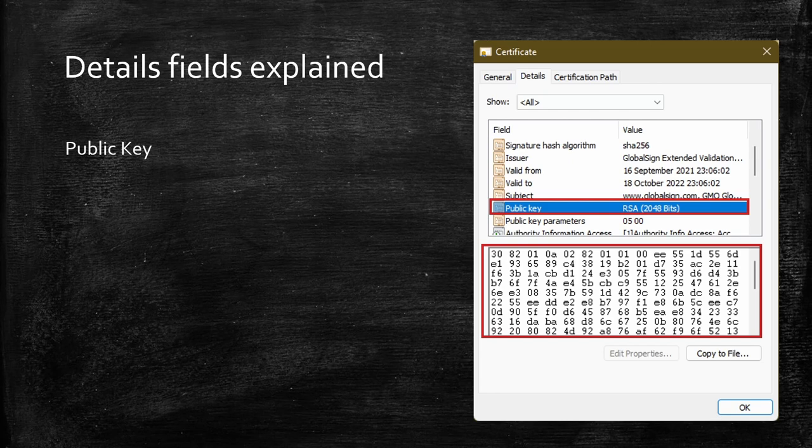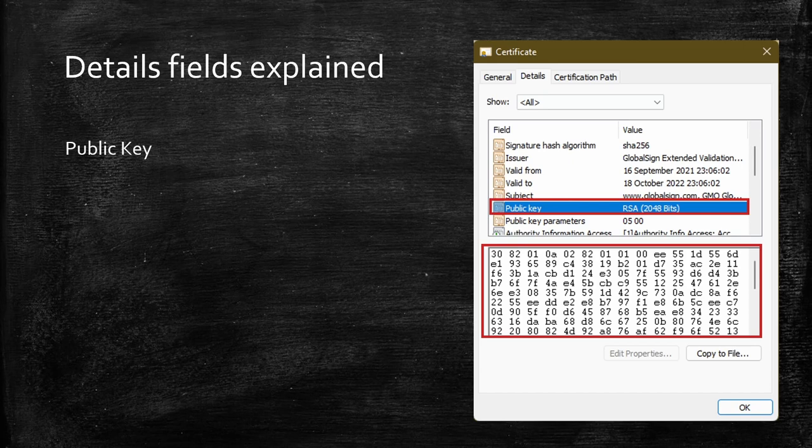Public key shows the ASN.1 encoded public key data stored in the certificate in hex format. Public key parameters shows the parameters to be used to verify a certificate. There are some signing algorithms that require a parameter. For example, RSA PSS requires some parameters to sign and verify. You should see those parameters if such algorithms were used. In this image, we see 0500, which means null. In the case of an ECDSA key, you should see the curve in use.